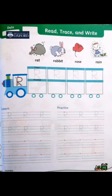Now let's open your workbook page. You have already learned all these vocabulary words. Now you just have to write it. R is very simple to write. First of all, you have to make a line from line one to line three.